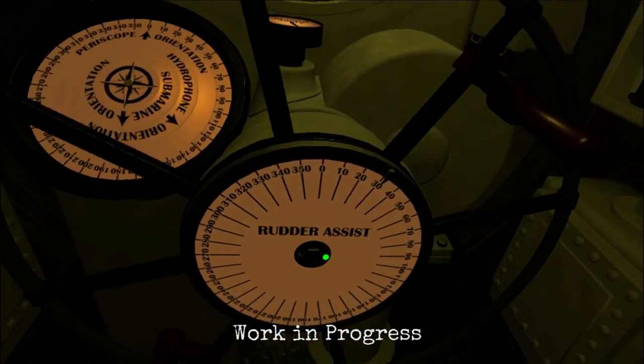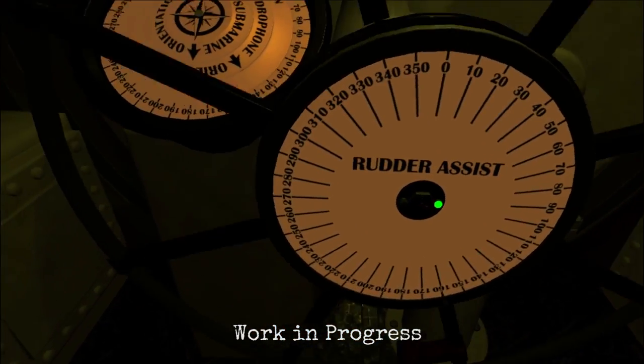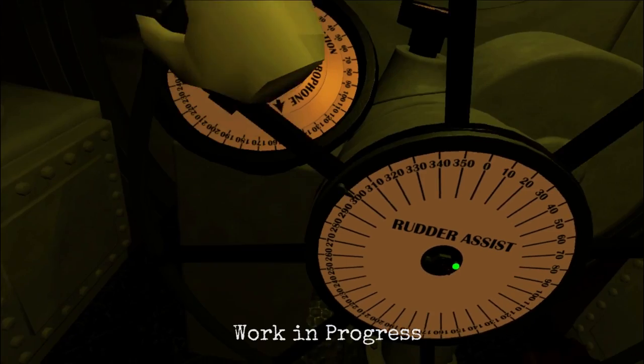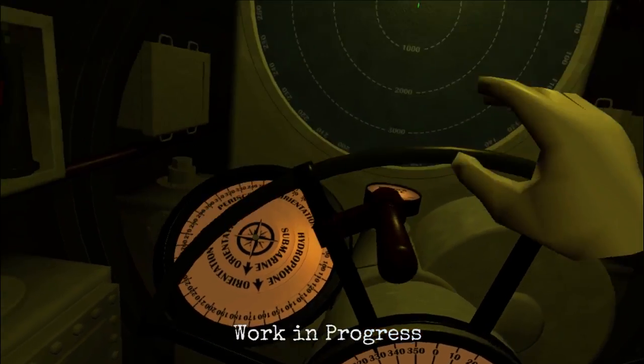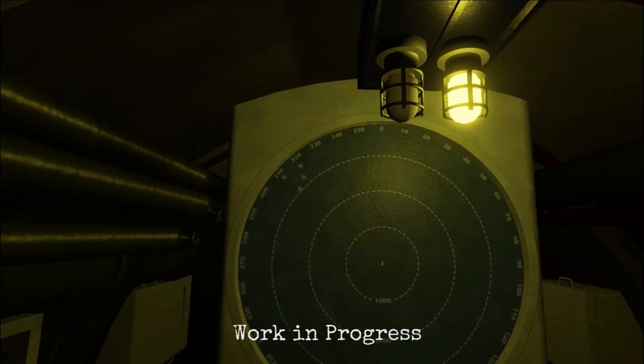It's a much easier way to maneuver the sub, but it isn't as fast as controlling the rudder directly. Now let's choose a bearing of 330 as this should allow us to intercept the convoy that was detected earlier.